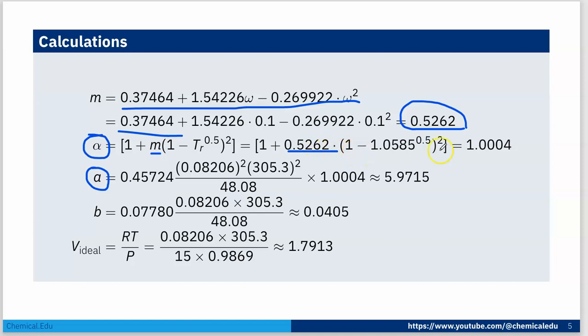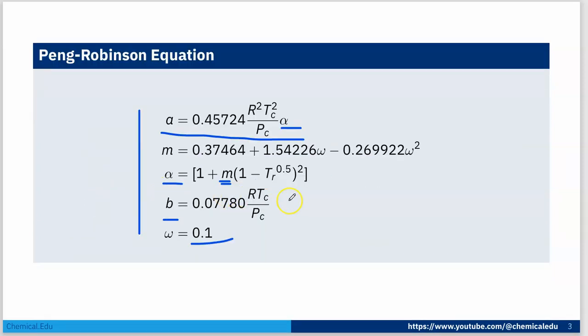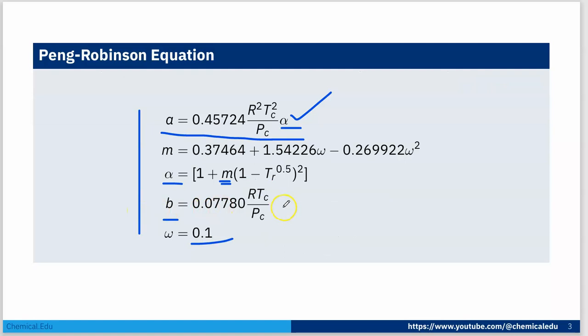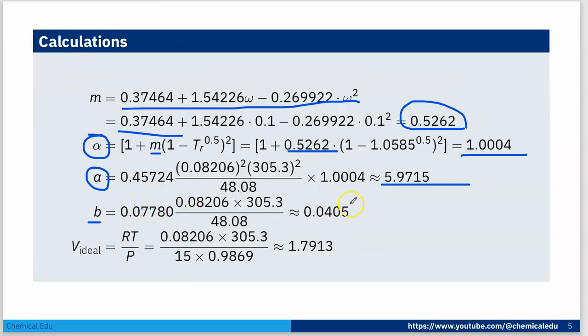Now we can calculate A using the formula. Plugging in all values gives A = 5.9715. For B, using the formula, we get B = 0.0405. The ideal volume V_ideal = RT/P = 1.7913.